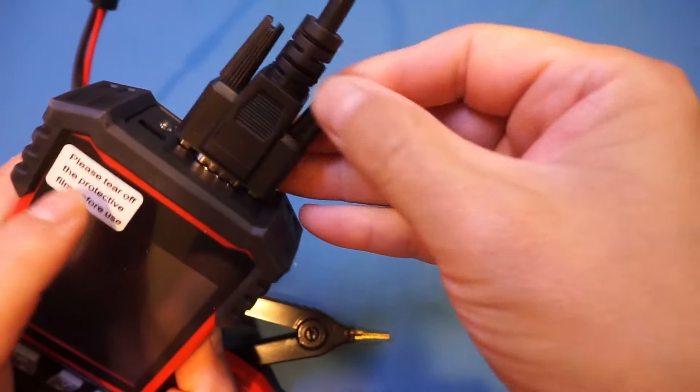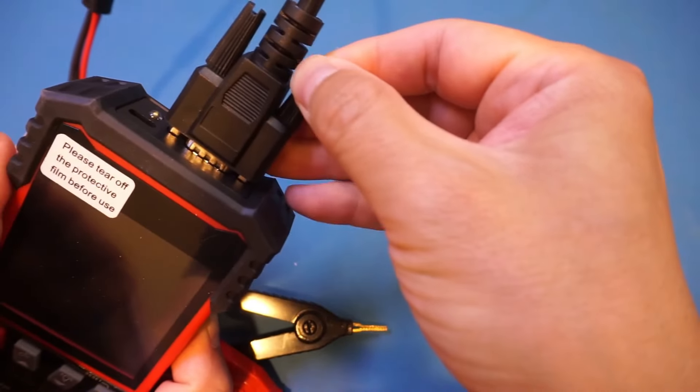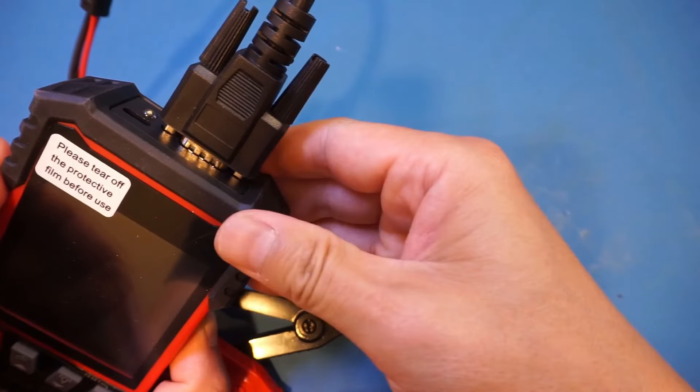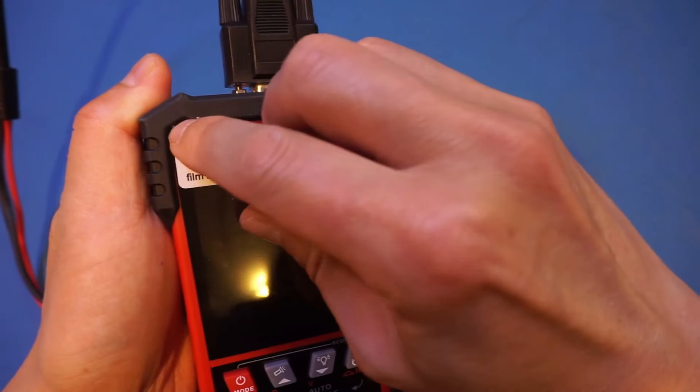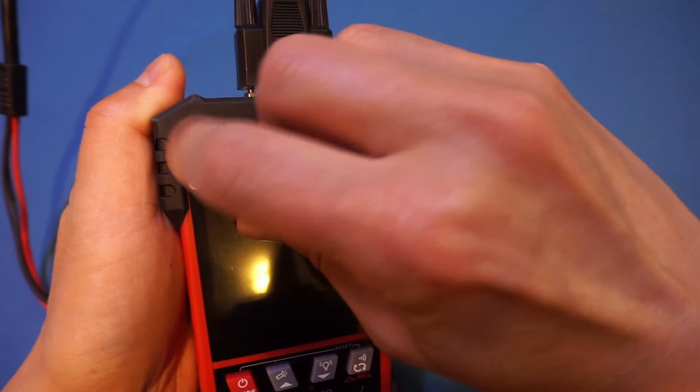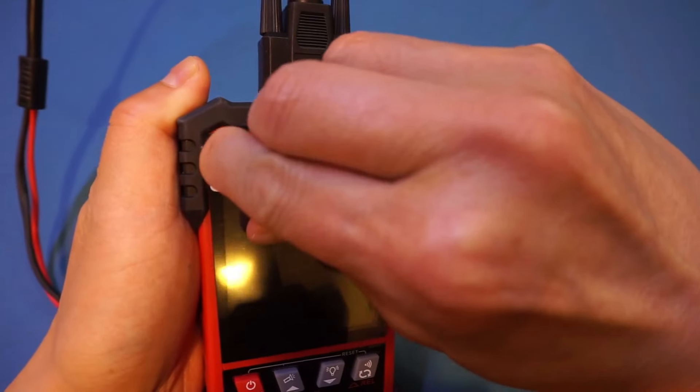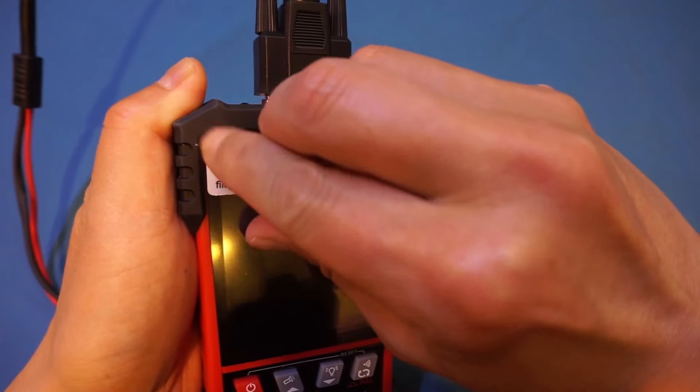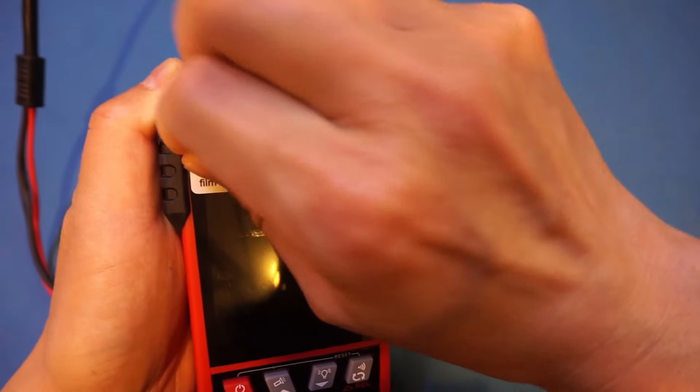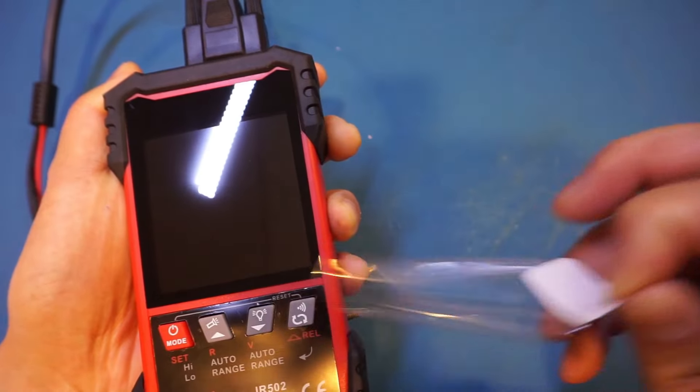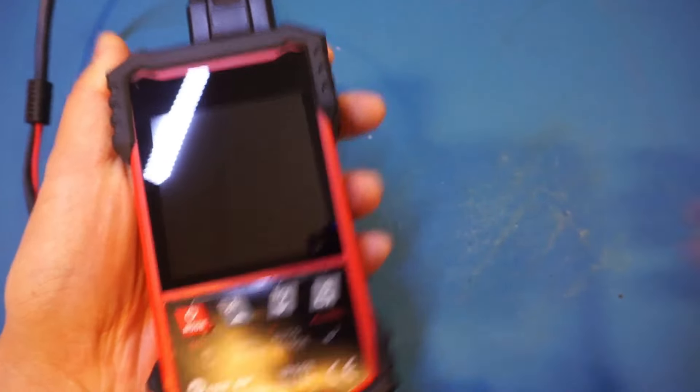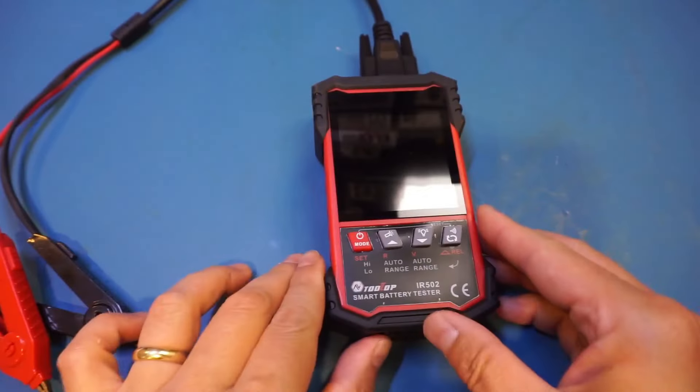Anyway, let's power it on and take a look. But let's first connect the probes. We still have this sticker here - let's remove the protective film before use. It's a little bit difficult to remove. Oh look at that, it's quite shiny here.